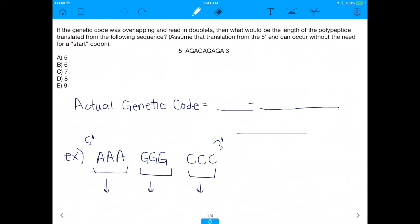What's up YouTube? Alright, so today's question is about the genetic code. And it's going to require a bit of creativity because it's asking us about a hypothetical genetic code. It says if the genetic code was overlapping and read in doublets, what would be the length of the polypeptide translated from the following sequence? And this is the sequence right here.